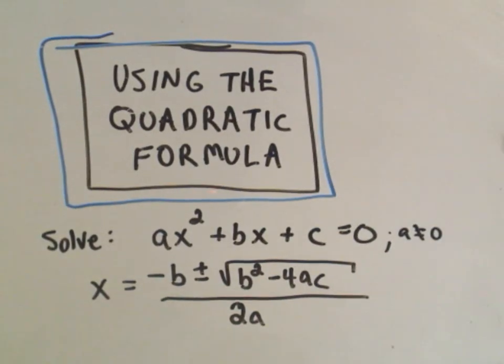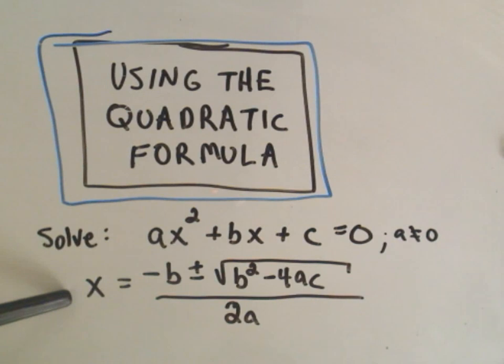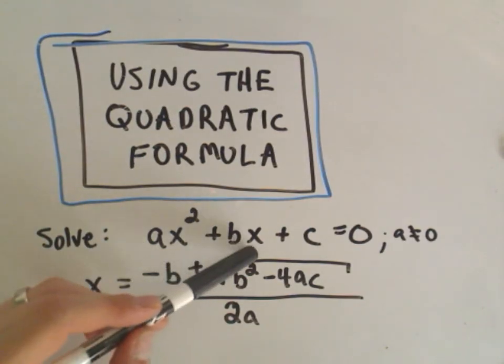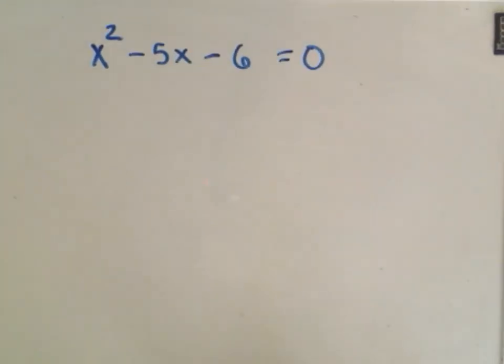If a is zero, it's not a quadratic equation anymore. The formula we use is x = (-b ± √(b² - 4ac)) / 2a. Whatever number is in front of x squared is our a value, whatever number is in front of x is our b value, and whatever number is hanging out is our c value.